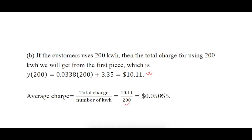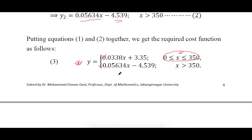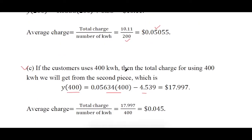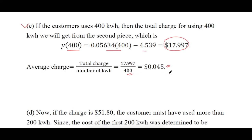For part c, the total cost for 400 kilowatt hours falls in the second range, so you use the second function. Substituting x = 400 gives the total charge for 400 units, and the average charge is total charge divided by kilowatt hours.